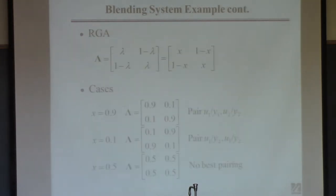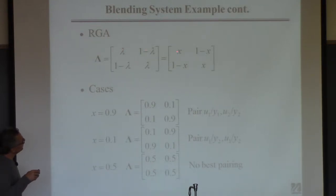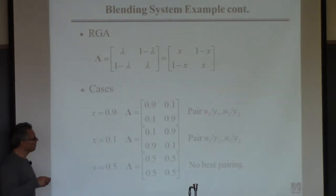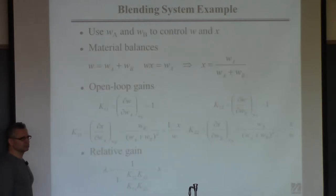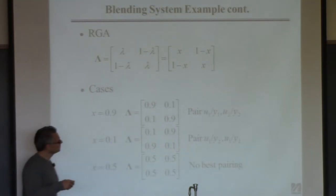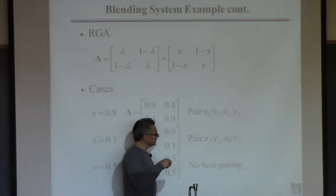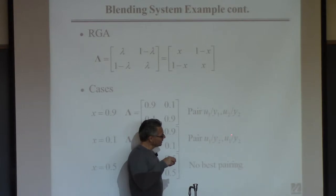So now here's your RGA. We already calculated lambda equals X, so that means this has to be 1 minus X, and this has to be X, so the rows and columns sum to 1. If mole fraction is close to 1, then you want to pair WA with W and WB with X. If the mole fraction is quite small — like 0.1 — then you'll get an RGA that looks like this, and you should use WA to control X and WB to control W.